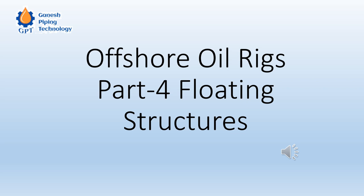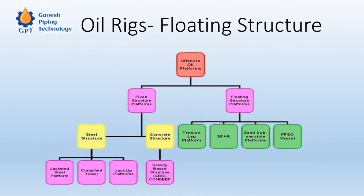The floating structure platform has four primary types: first is the tension leg platform, second is the spar platform, third is the semi-submersible platform, and fourth is the FPSO vessel, which stands for floating production, storage and offloading.